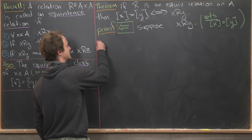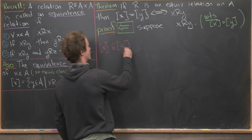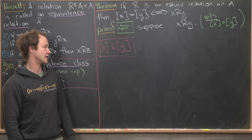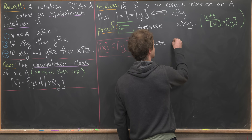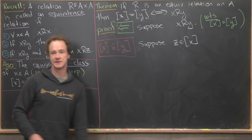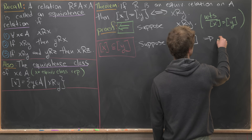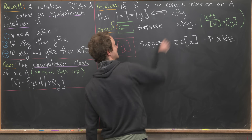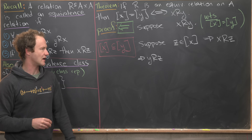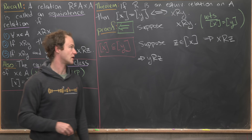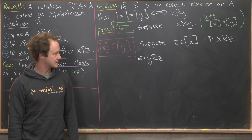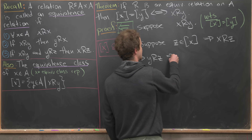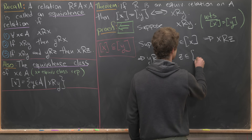Let's set that up. First, we'll prove the equivalence class of X is a subset of the equivalence class of Y using our standard subset method. Suppose Z is in the equivalence class of X. By definition of equivalence class, that means X is related to Z. Then by transitivity — using symmetry as needed — we see that Y is related to Z. We have X related to Y (our starting assumption), X related to Z (from Z being in the class), so putting those together gives Y is related to Z. But Y being related to Z means Z is in the equivalence class of Y.